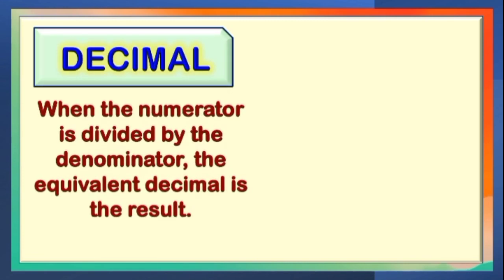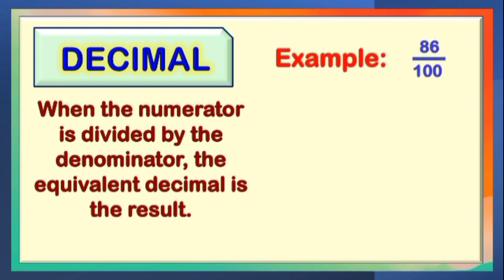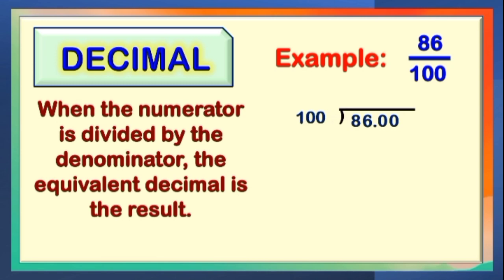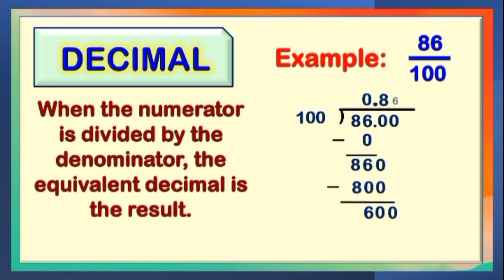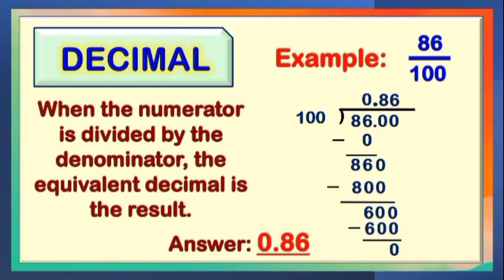The next term is Decimal. When the numerator is divided by the denominator, the equivalent decimal is the result. Let's take this example: 86 out of 100. So let us divide the numerator, which is 86, by the denominator, which is 100. And the final answer is 0 and 86 hundredths.